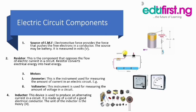Three: meter. There are two types of meter. We have the ammeter, which is the instrument used to measure the amount of current in an electric circuit. The second is the voltmeter, which is an instrument used to measure the amount of volts in a circuit. Four: inductor. This device is used to produce alternating current in a circuit. It is made up of a coil of good electrical conductor. The unit for inductance is the Henry (H). From the diagram, you can see that a transformer is part of the inductor.